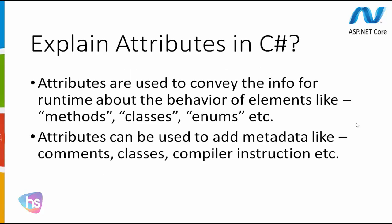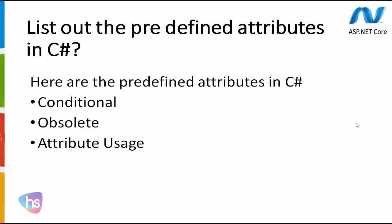Coming to the next one: explain attributes in C-Sharp. Attributes are used to convey information to the runtime about the behavior of elements like methods, classes, enums, etc. Attributes can be used to add metadata like comments, classes, compiler instructions, etc. We apply these attributes wherever required when developing in C-Sharp.